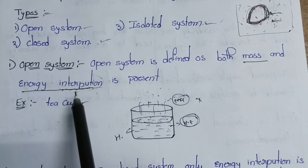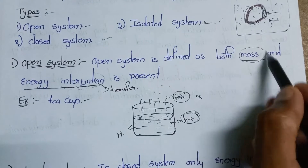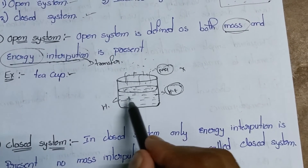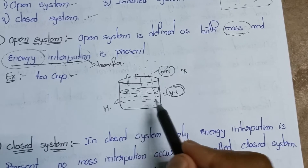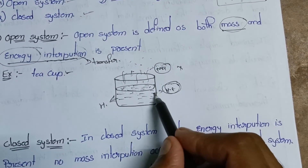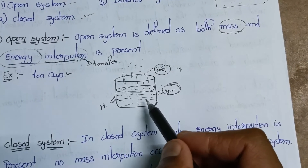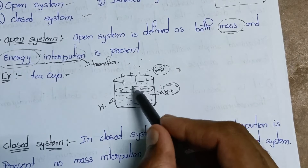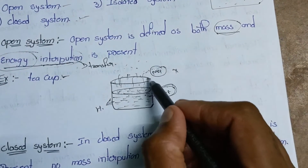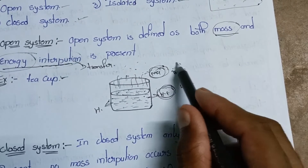In an open system, mass and energy interactions are present, meaning transfer occurs across the boundary. For example, heat energy from a surface can be transferred into a container. The water inside can transform into vapor, and the heat energy is transferred out. This is the open system.